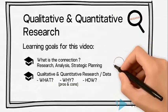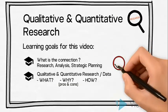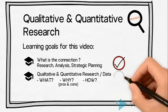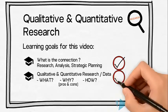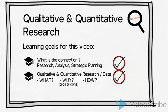We have now established a connection with the rest of the research, analysis and strategic planning process. Subsequently, we have used an example to illustrate what qualitative and quantitative research is. We have highlighted the pros and cons of each and provided different examples of how we can conduct these two types of research.